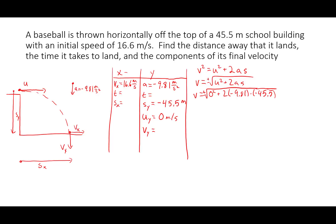2 times negative 9.81 times negative 45.5 equals 892. The square root of that equals 29.9. So vy equals plus or minus 29.9 meters per second. Since it's going down when it hits the ground, it's going to be negative — so vy is negative 29.9 meters per second.